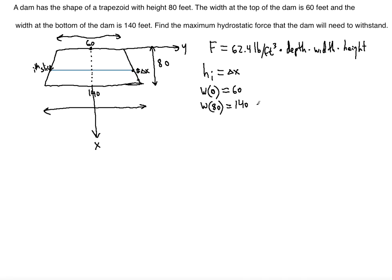Now we can formulate an equation using these two points because they are ordered pairs: (0, 60) and (80, 140). So we have x equal to 0 paired with width 60, and x equal to 80 paired with width 140.